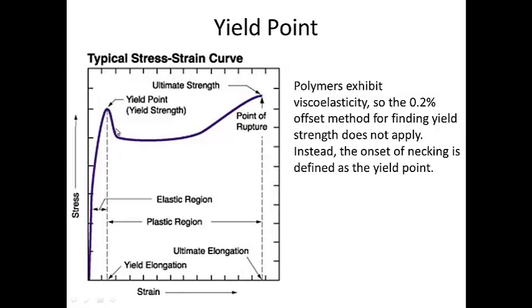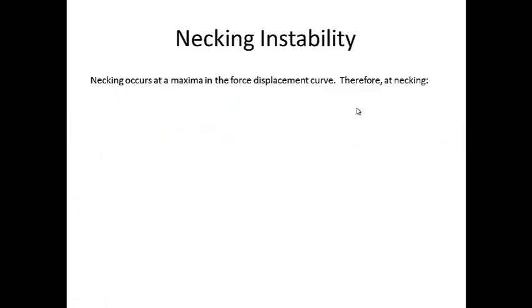So as I mentioned before, this is a typical curve for a thermoplastic polymer. And as you'll note, we define the yield point as the peak of the curve and the yield elongation as the strain that occurs at that peak. And as I mentioned, we can't use the 0.2% offset method for finding yield strength because of the viscoelastic effect of polymers, so instead we define it as the point of necking.